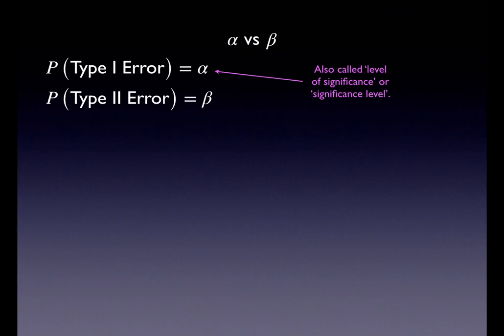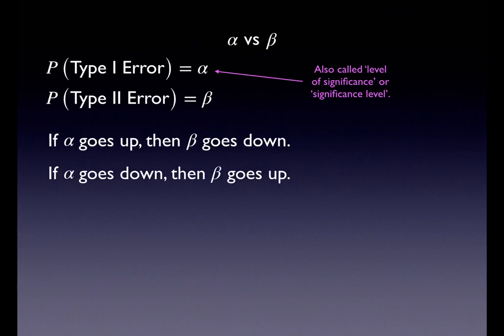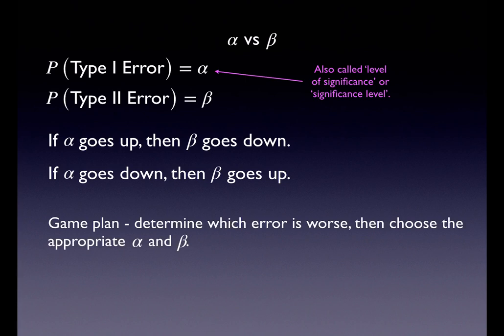The consequence of lowering and raising alpha is that if alpha goes up, beta goes down, and if alpha goes down, beta goes up. The game plan is: before the experiment, we look at what a type one and type two error mean in context and consider their consequences. If a type one error seems really bad, lower the alpha threshold, knowing beta will likely go up. If a type two error is worse, raise your alpha so that beta goes down.